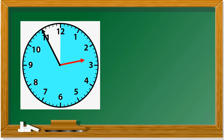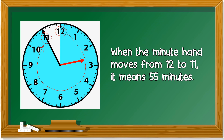Let's look at this. From twelve to eleven, the minute hand moves like this. When the minute hand moves from twelve to eleven, it means 55 minutes. Counting: twelve to one is five, ten, fifteen, twenty, twenty-five, thirty, thirty-five, forty, forty-five, fifty, fifty-five minutes.